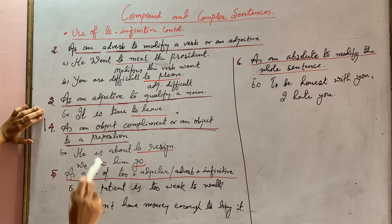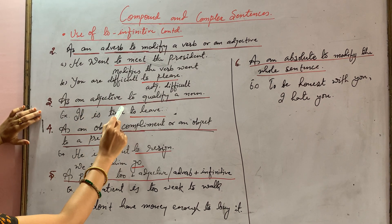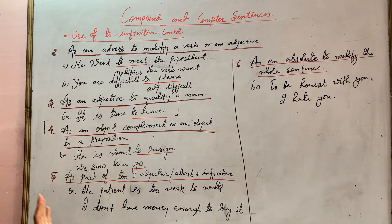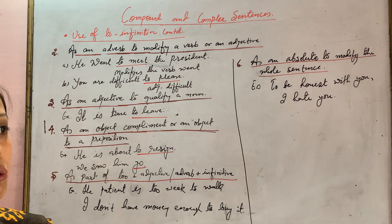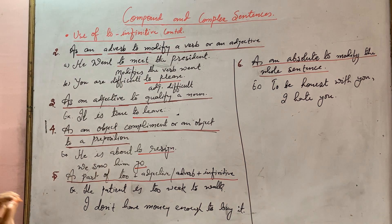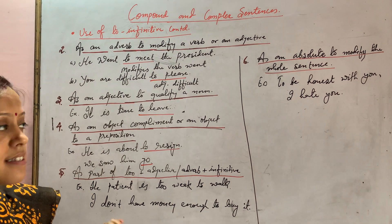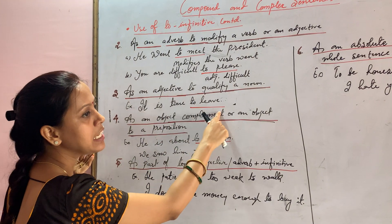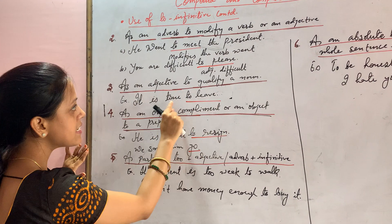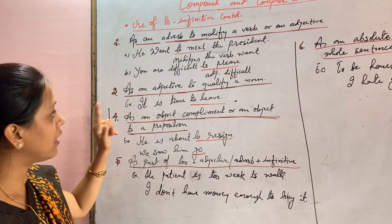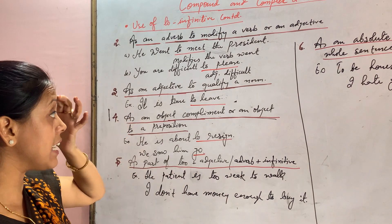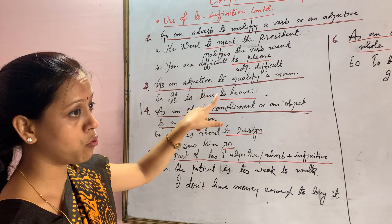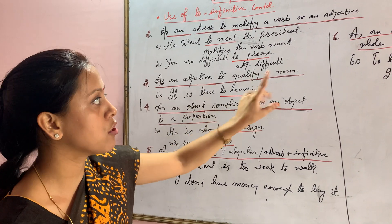The third way to use the to-infinitive is as an adjective to qualify a noun. For example: 'It is time to leave.' Here, 'to leave' qualifies the noun 'time,' making the meaning of the sentence clearer.